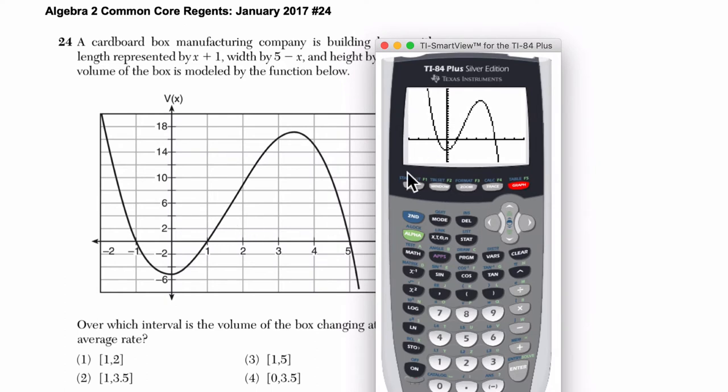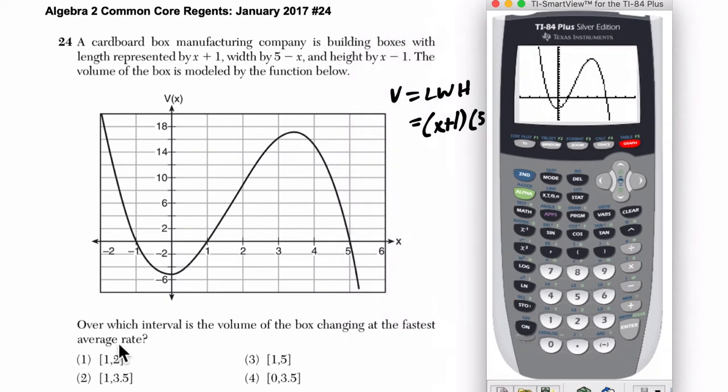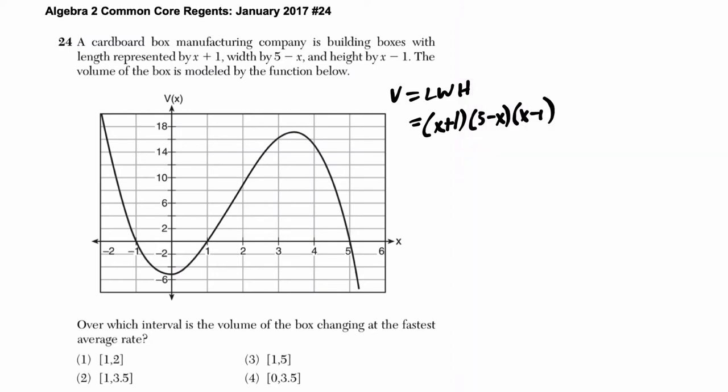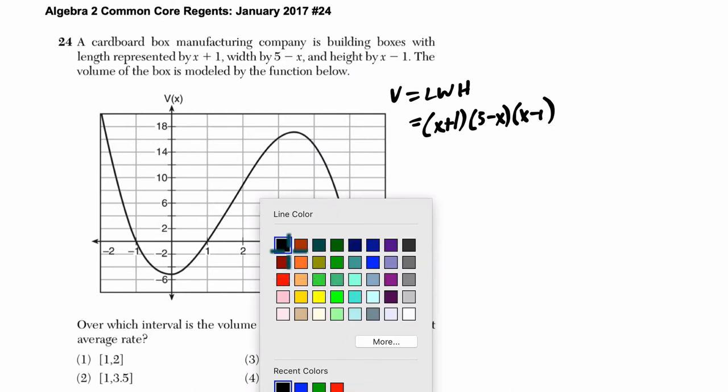Yes, there it is. So really similar. They want to know on which interval is the volume of the box changing at the fastest average rate? So my first technique then is just to look at this and say, if I estimate my rates here, what am I looking at? Let's start with blue.